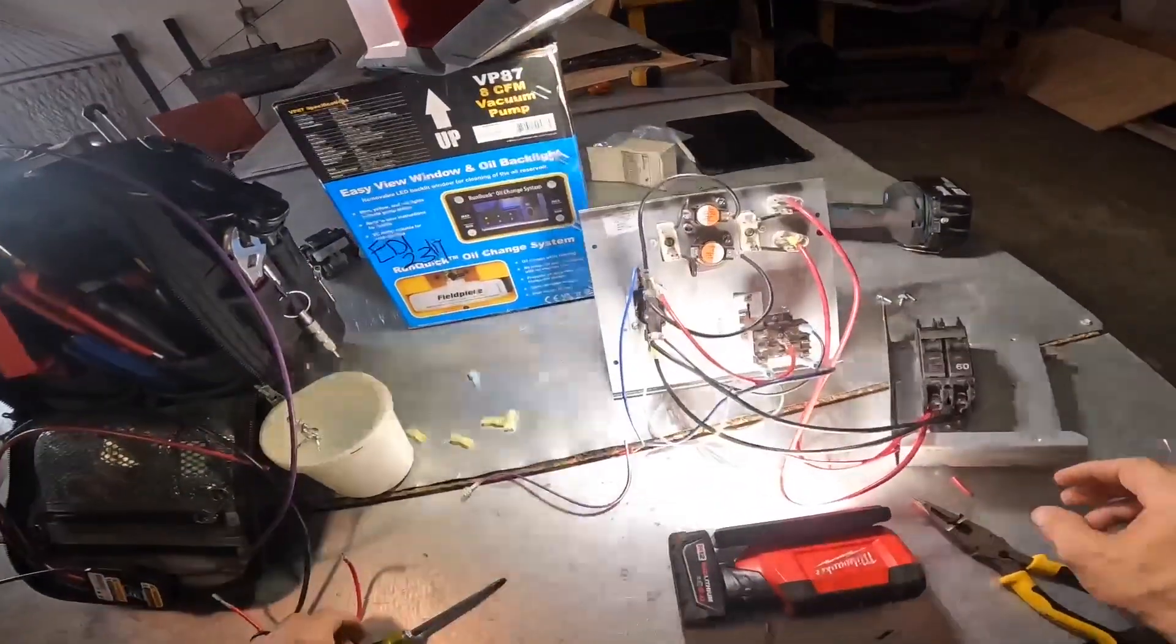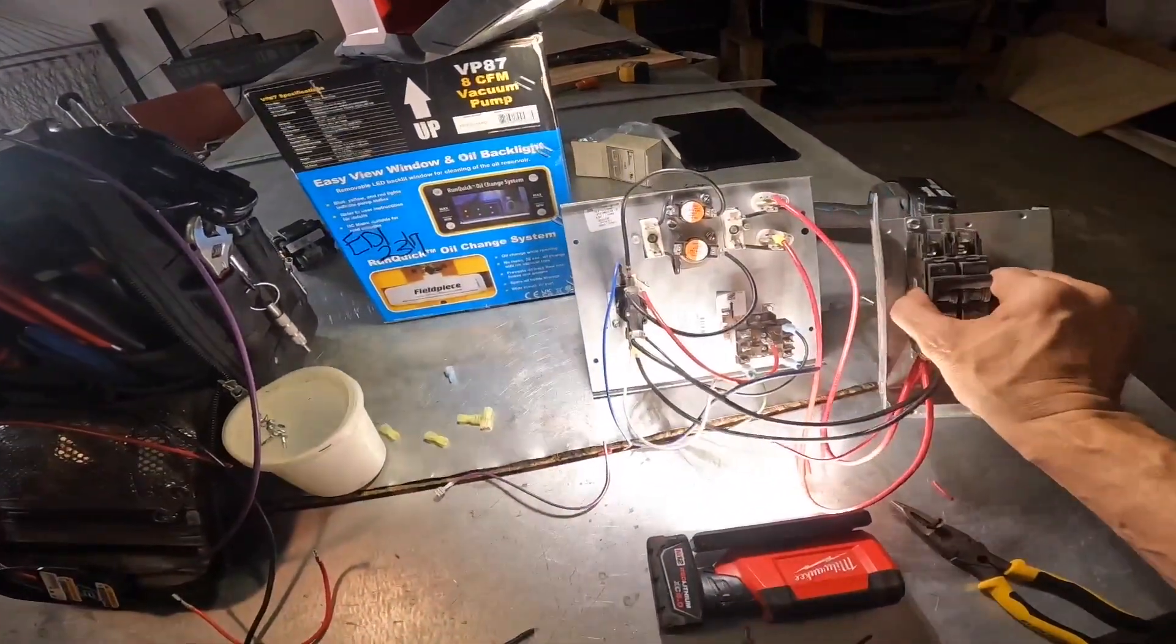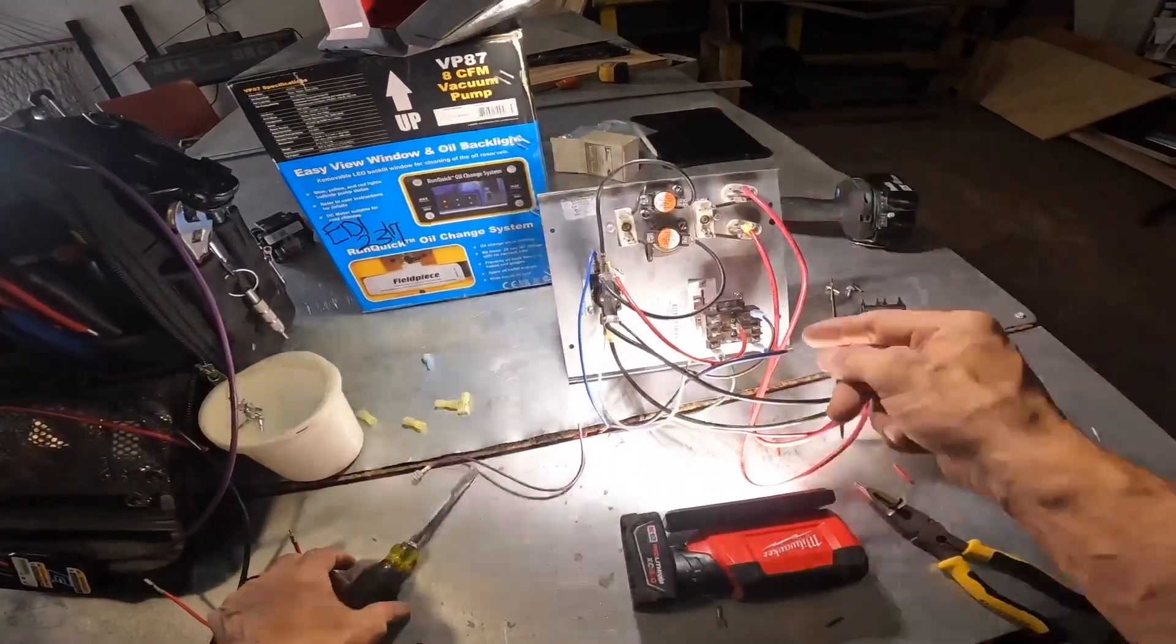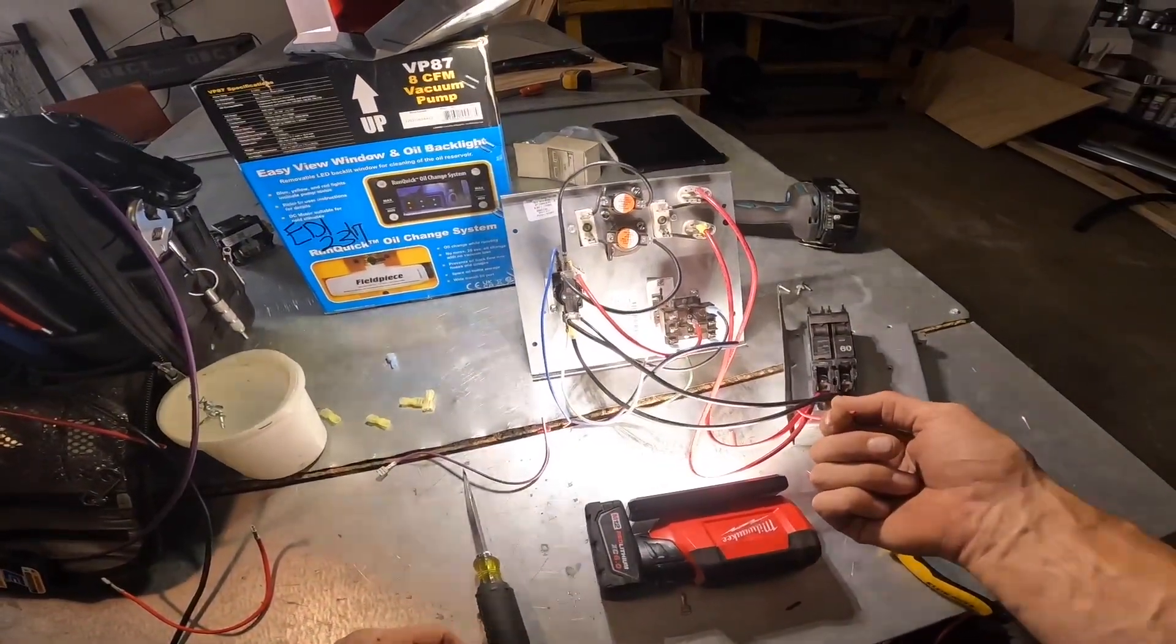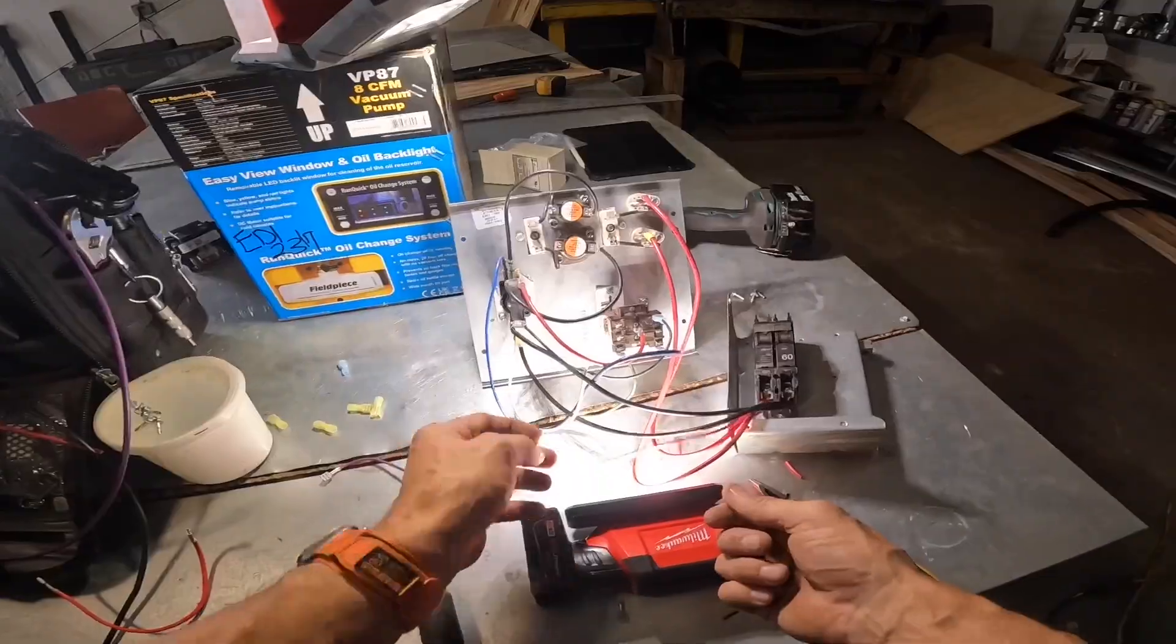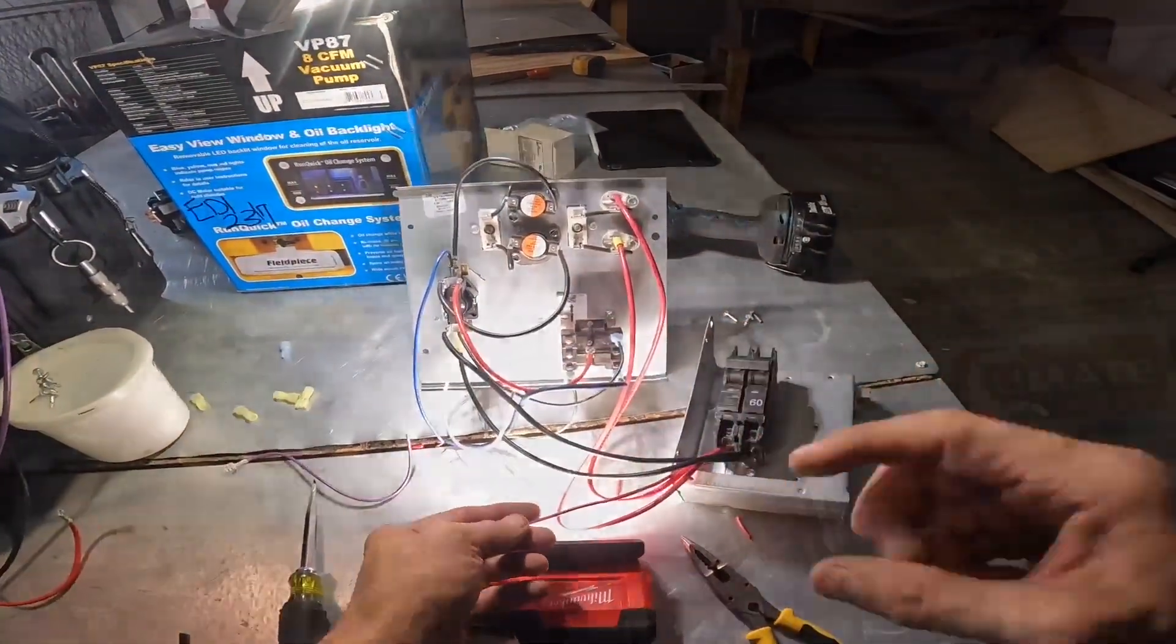Alright. So all we need is power coming in and we'll have power to this. Like I said this goes to one leg of my blower motor, the run winding, and my common goes to here.